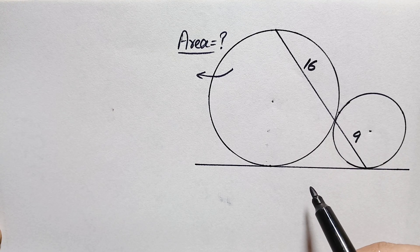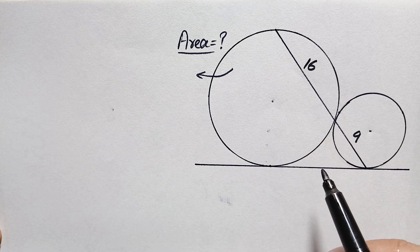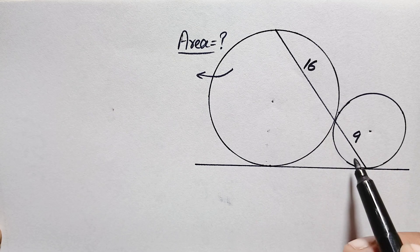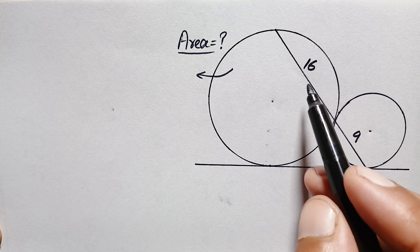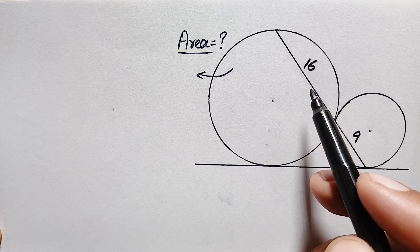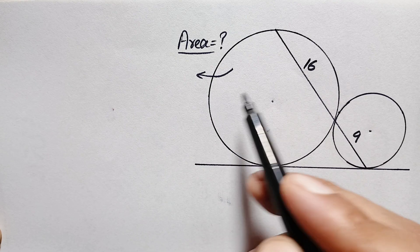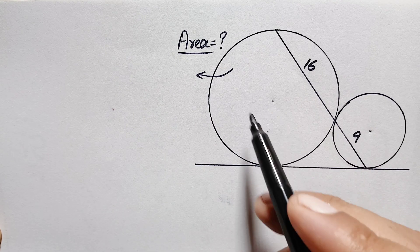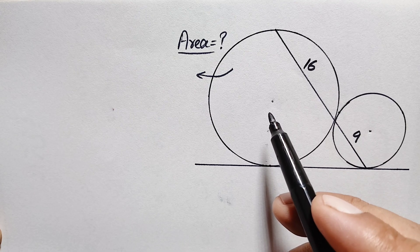Hello everyone, you are welcome. Today we have a new interesting geometry math problem. We have given two circles such that the length of the chord in the smaller circle is 9 units and the length of the chord in the bigger circle is 16 units. Our target is to find out the area of this bigger circle.